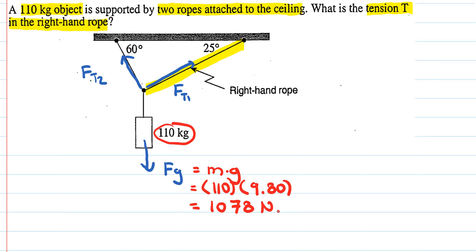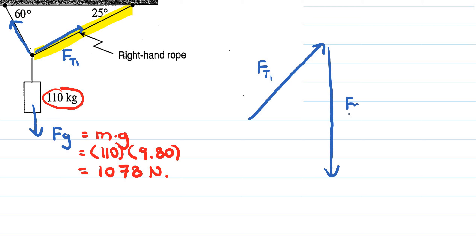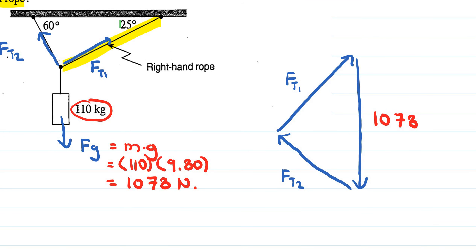Now I'll construct the triangle with FT1, FG equal to 1078 newtons, and FT2. Working with the angles: we have 25 degrees here, and on the triangle diagram this is the 25-degree angle. Taking 90 minus 25 gives 65 degrees for this inner angle.